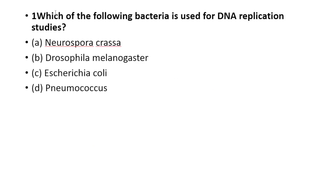Which of the following bacteria is used for DNA replication studies? The options are: Neurospora crassa, Drosophila melanogaster, Escherichia coli, and Pneumococcus. The answer is Option C, Escherichia coli.